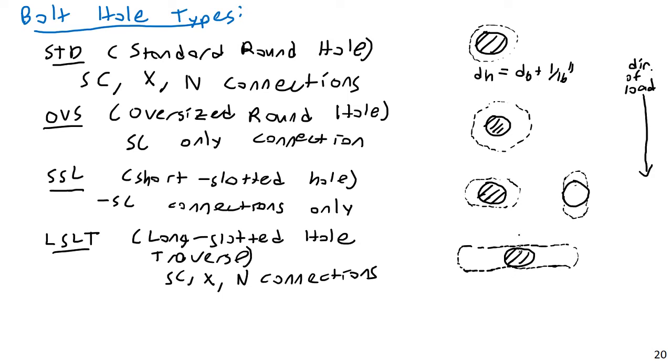So our bolt, it's going to be loaded in the vertical direction here as I've drawn it, and in that vertical direction, it is bearing right up against the plate. There's not a lot of gap. There's only a 1/16th inch gap here or here, but in the other direction, the direction it's not even being loaded, there is a longer direction. There's a longer slot, and this is mainly for fabrication purposes.